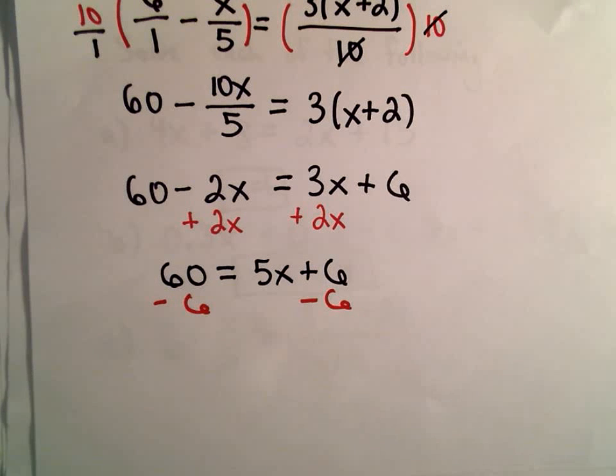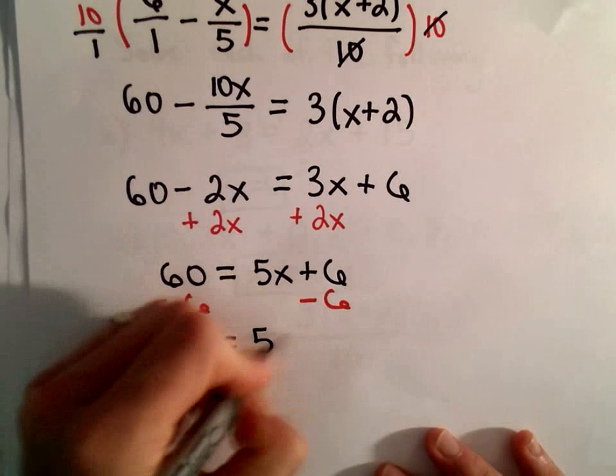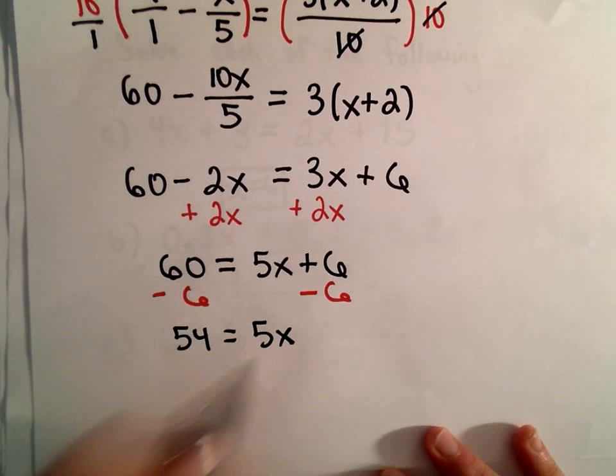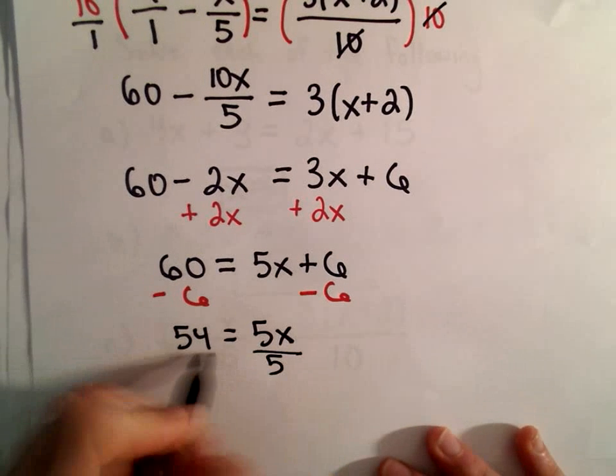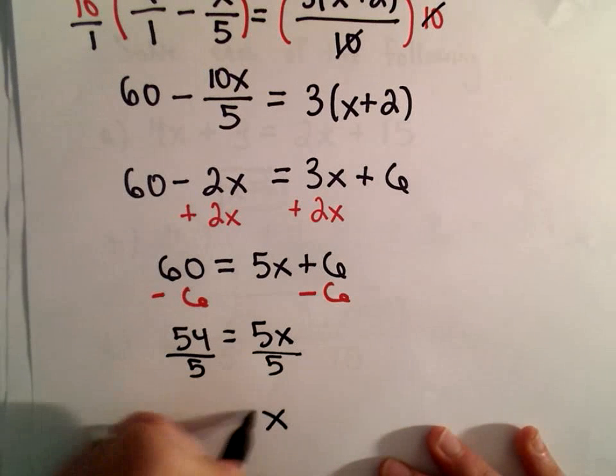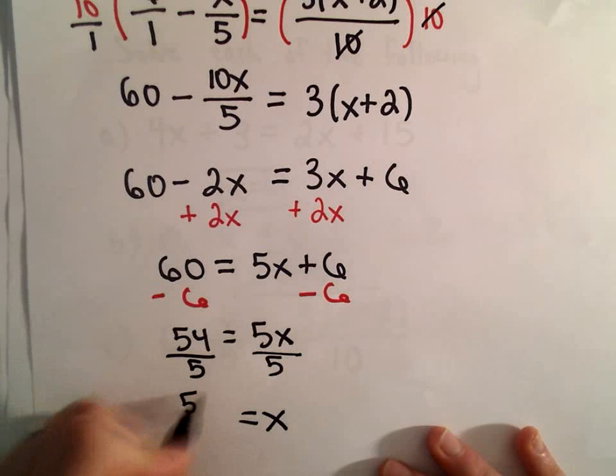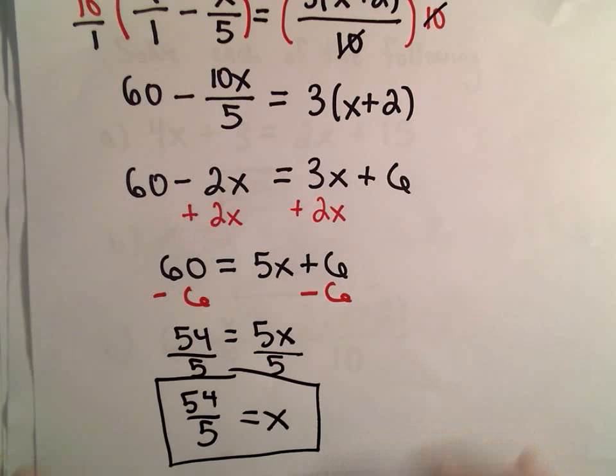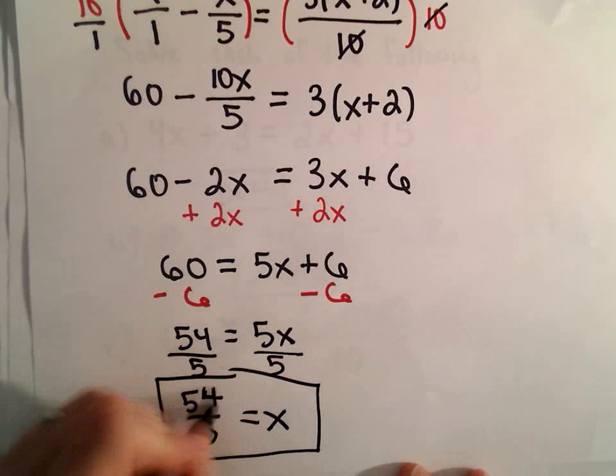60 minus 6 will be 54, equals 5x. And the last thing we'll do here, since we're multiplying by 5, is divide both sides by 5. And then we'll have our solution: x equals 54 over 5. That doesn't reduce, so I'm going to leave our solution just like that as a fraction.